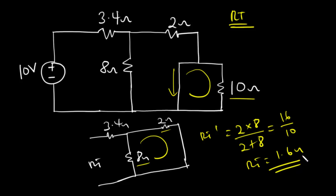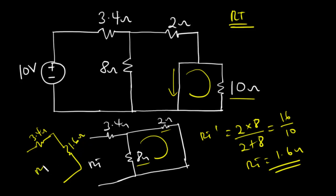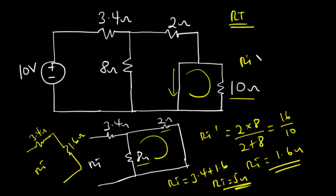The 1.6-ohm equivalent is going to be in series with the 3.4-ohm resistor. So the circuit will have the 3.4-ohm resistor in series with the 1.6-ohm resistor. Since they are connected in series, we add them: 3.4 plus 1.6 equals 5 ohms. So the total resistance for this particular circuit is 5 ohms.